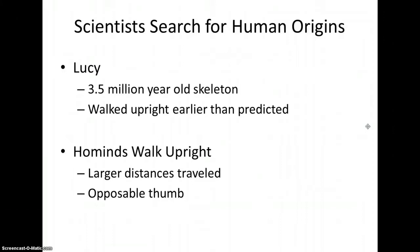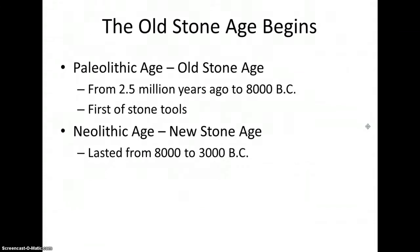The discovery helped prove that hominids were able to walk upright much earlier than first believed. Walking upright helped hominids travel long distances much easier than their ancestors. They had also developed the opposable thumb. The Paleolithic Age, or the Old Stone Age, lasted from about two and a half million years ago until 8,000 BC. During this time, the use of stone tools and fire probably developed.